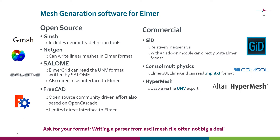On the commercial side, we also have many alternatives. GID is relatively inexpensive and has an add-on module that can directly write Elmer format. COMSOL Multiphysics, often used for similar applications as Elmer, can be read in MPH text format and may also be used as a preprocessor. HyperMesh is also known to work with Elmer — you can export meshes in UNV format and read them using ElmerGrid. If Elmer does not provide the import functionality for your specific format, you can always ask, because writing a parser for ASCII meshes is not that big a deal — it takes maybe just a few hours.